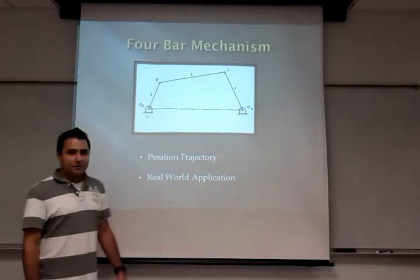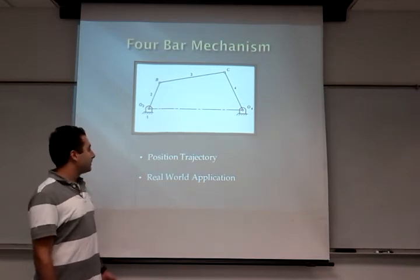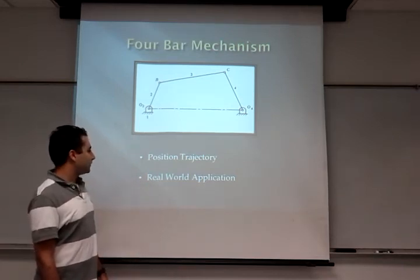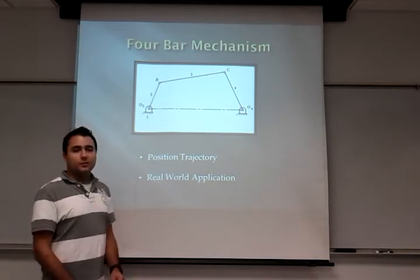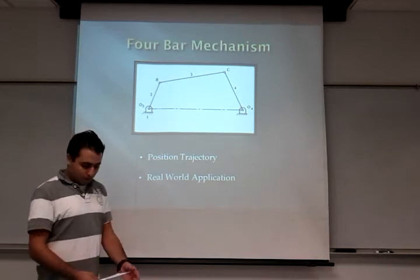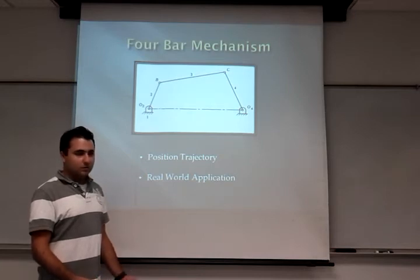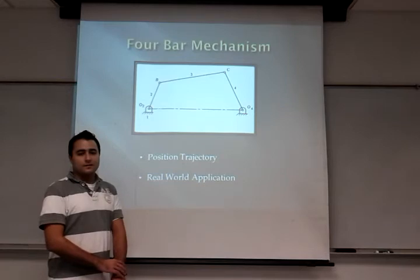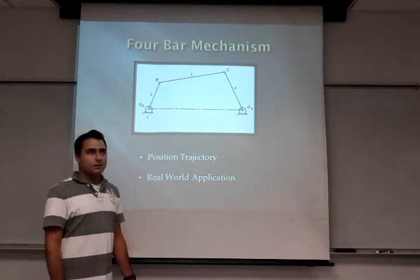Now we're going to talk about our second project, the 4-bar mechanism. We're going to talk about the position and trajectory. This is going to be a type 1 mechanism — a rocker crank. The definition is one link moves 360 degrees, and the other one has a limit between 60 and 120 degrees.